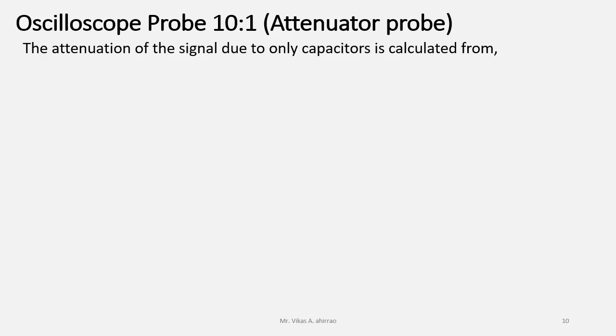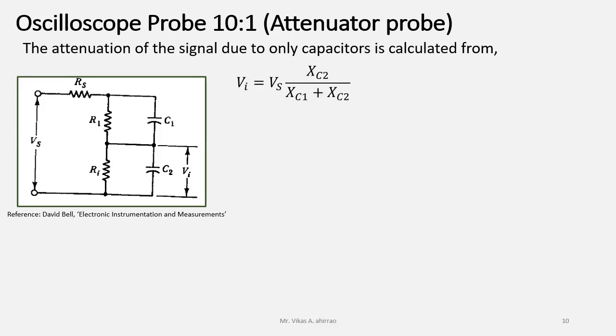The attenuation of the signal due to only capacitors is calculated from Vi equals Vs times Xc2 upon Xc1 plus Xc2. Here we are only considering the capacitance acting alone. In the equation, Xc1 is the capacitive impedance and the Xc2 will be the capacitive impedance of the capacitor C2. This is equal to Vs times 1 upon omega C2 upon 1 upon omega C1 plus 1 upon omega C2.